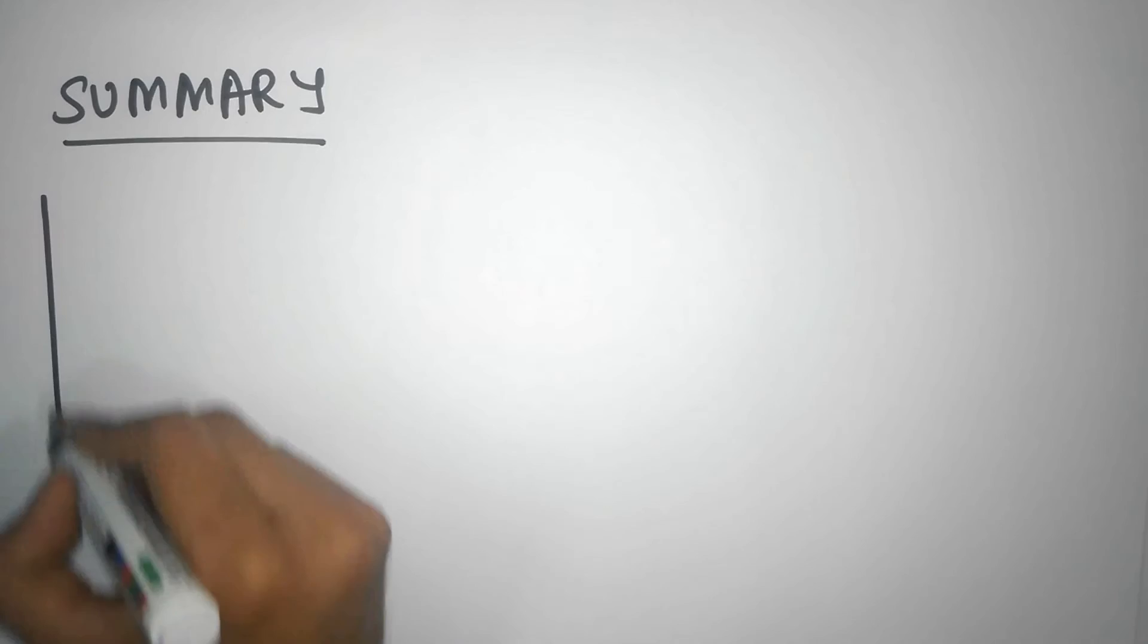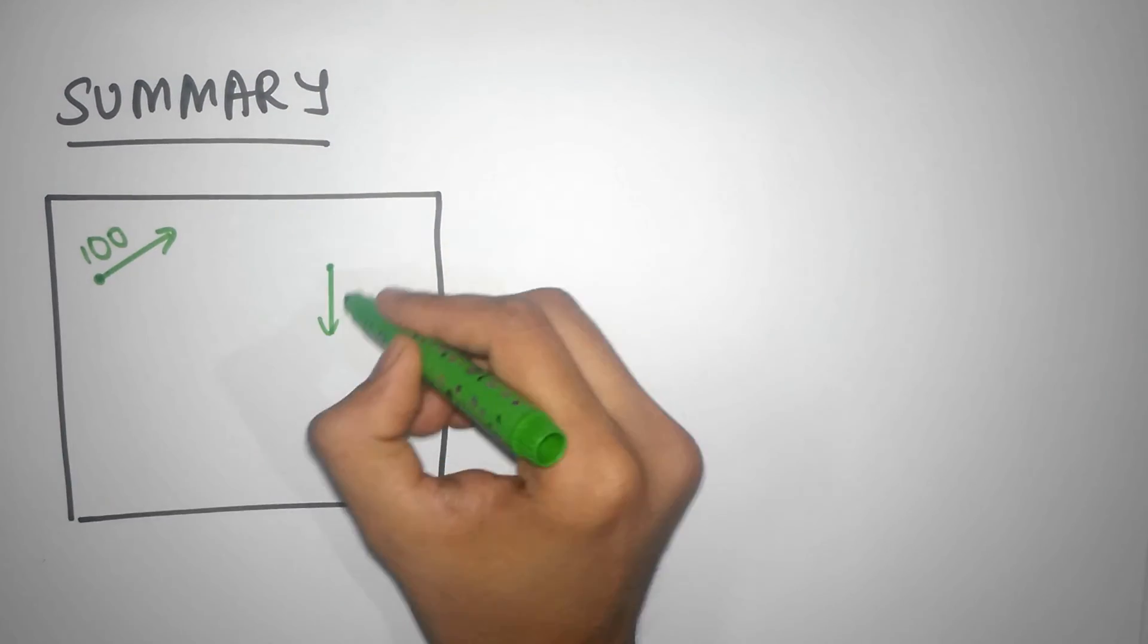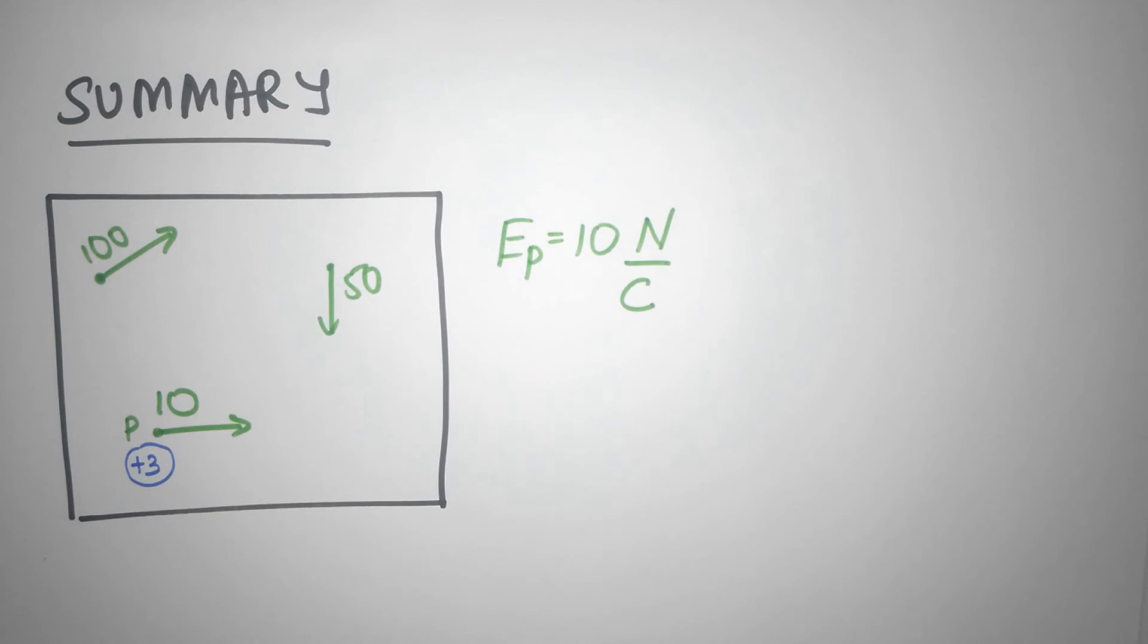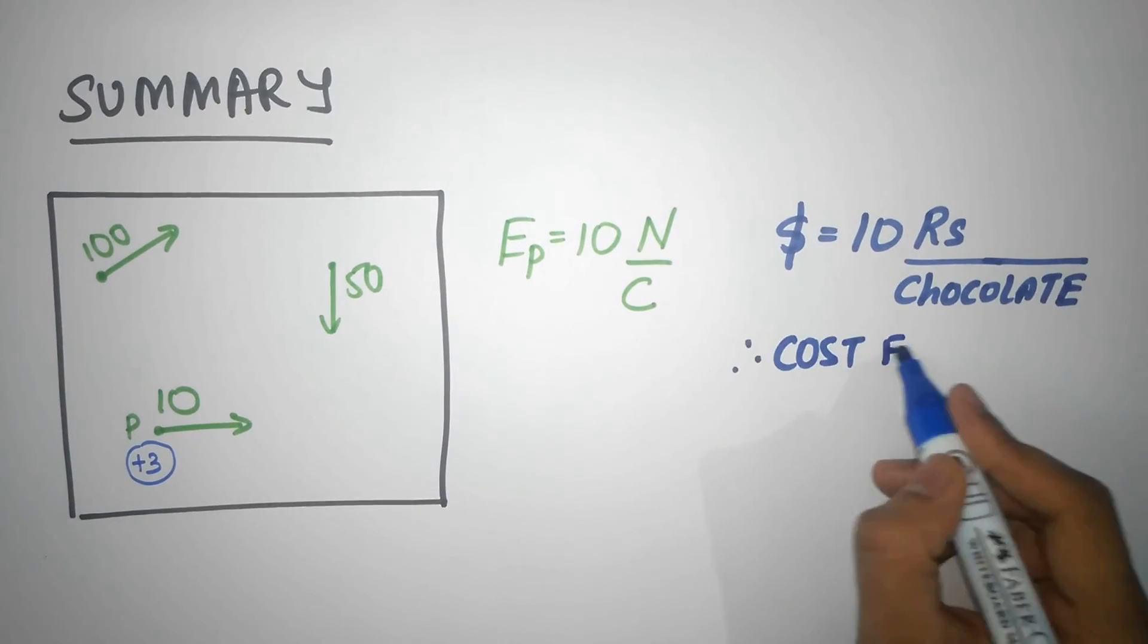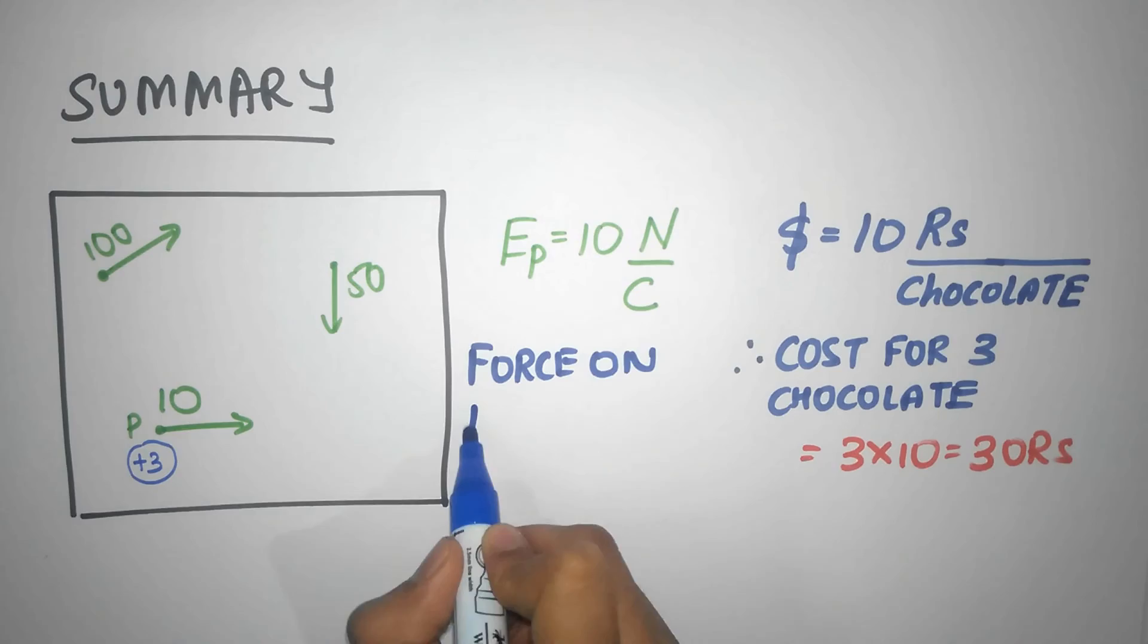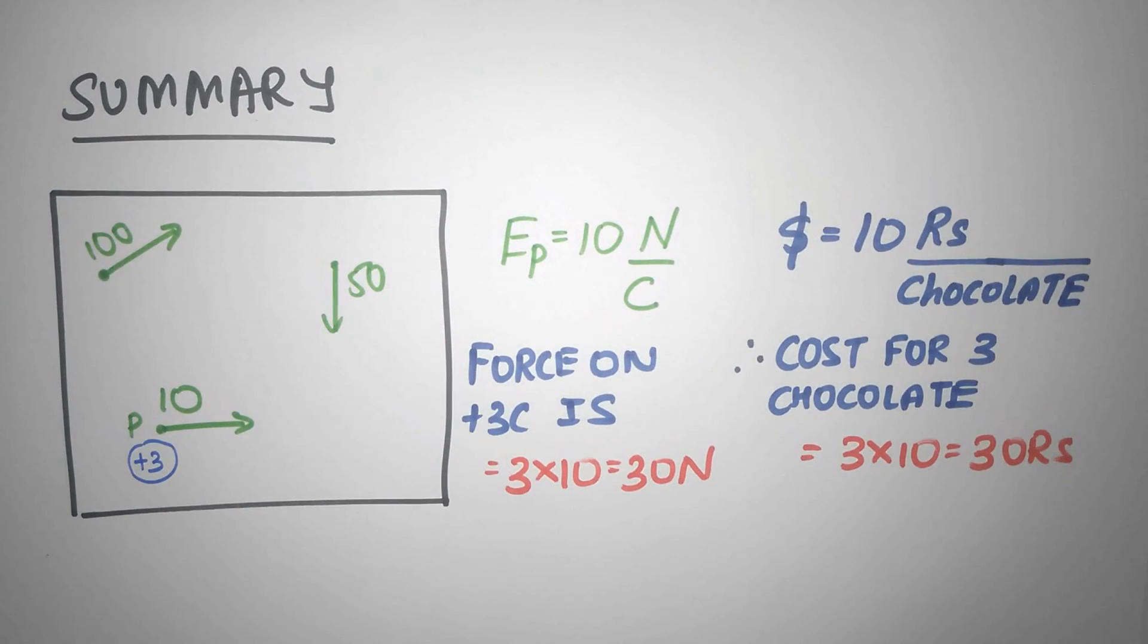So to summarize, fields are just numbers that we assign to every point in space, and they are an indicator of force per coulomb. Pretty much like how shopkeepers use an indicator like 10 rupees per chocolate. So if you want to buy say 3 chocolates, you just multiply 3 with 10. Simple, isn't it? If you want to learn more stuff in a very simple manner, then please stay tuned.